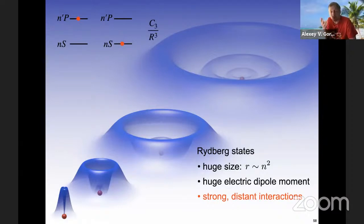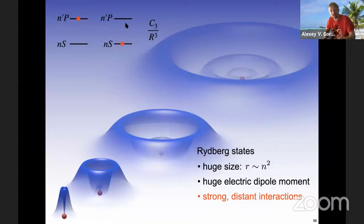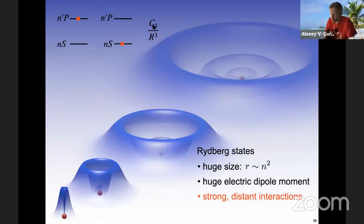The thing that is really huge is the transition electric dipole moment. Taking two Rydberg states N-S and N'-P — where S is L equals zero and P is L equals one — the transition dipole moment between them is large and increases as N and N' go higher. The types of interactions that grow dramatically with N are flip-flop interactions, which are dipolar one-over-R-cubed interactions where the C3 coefficient is proportional to the square of the transition dipole moment. Each dipole moment goes as N squared, so C3 goes as N to the fourth.